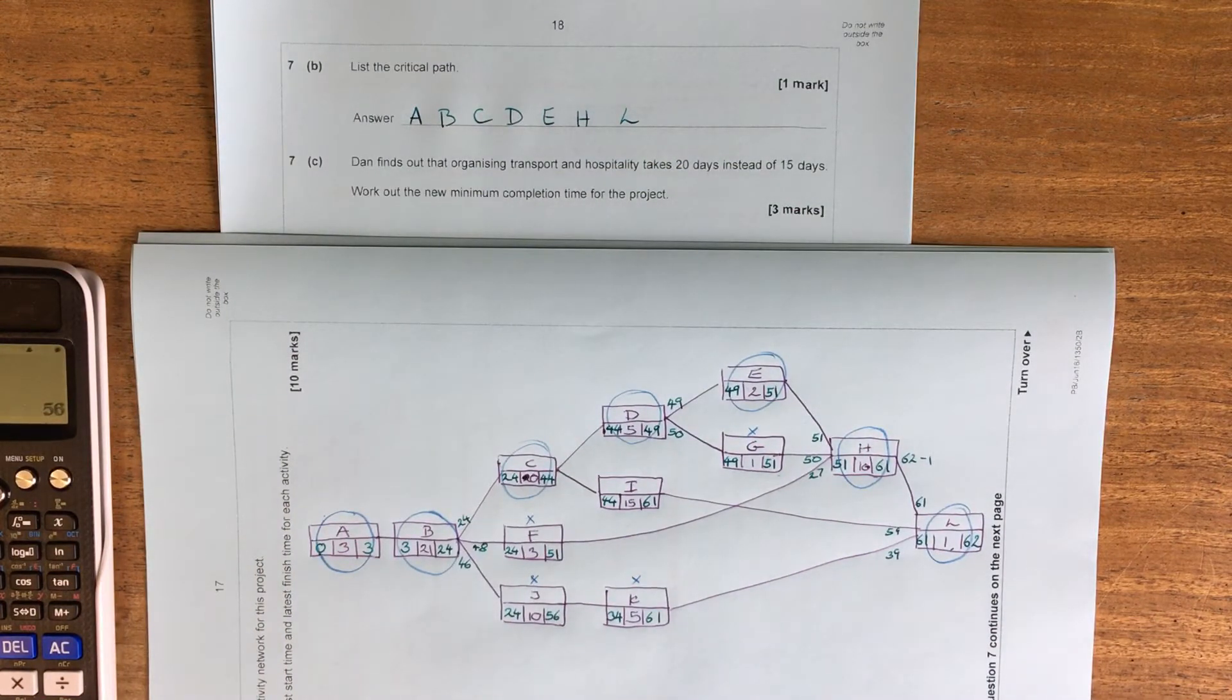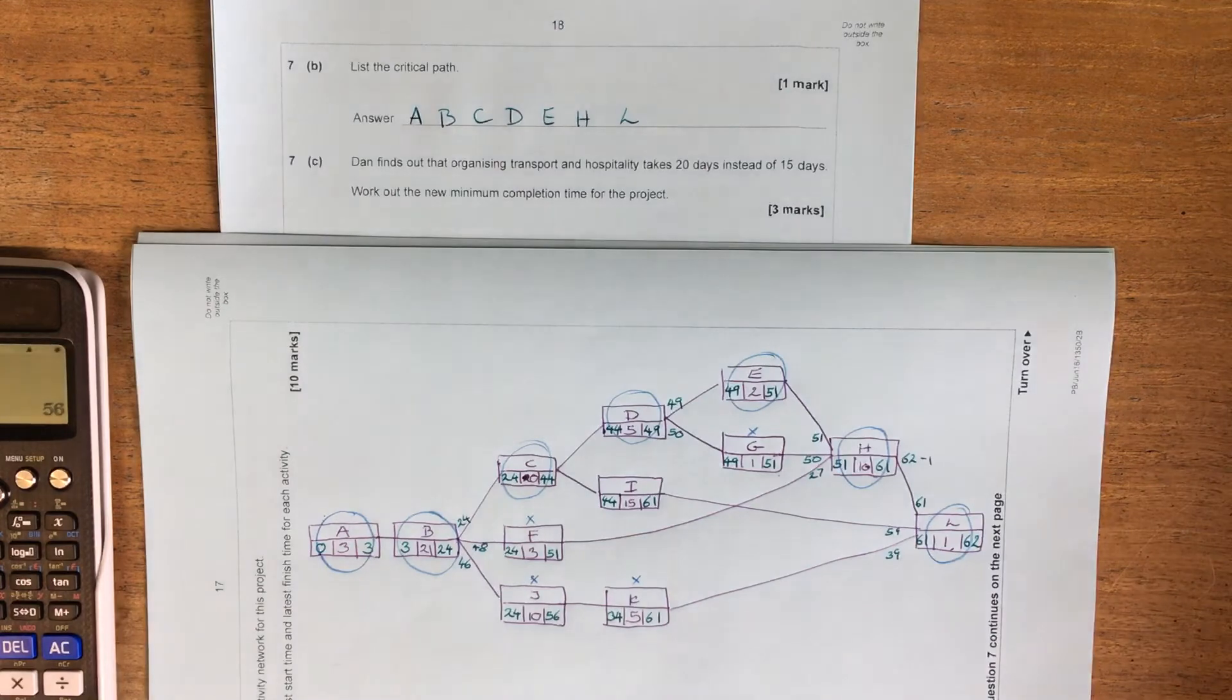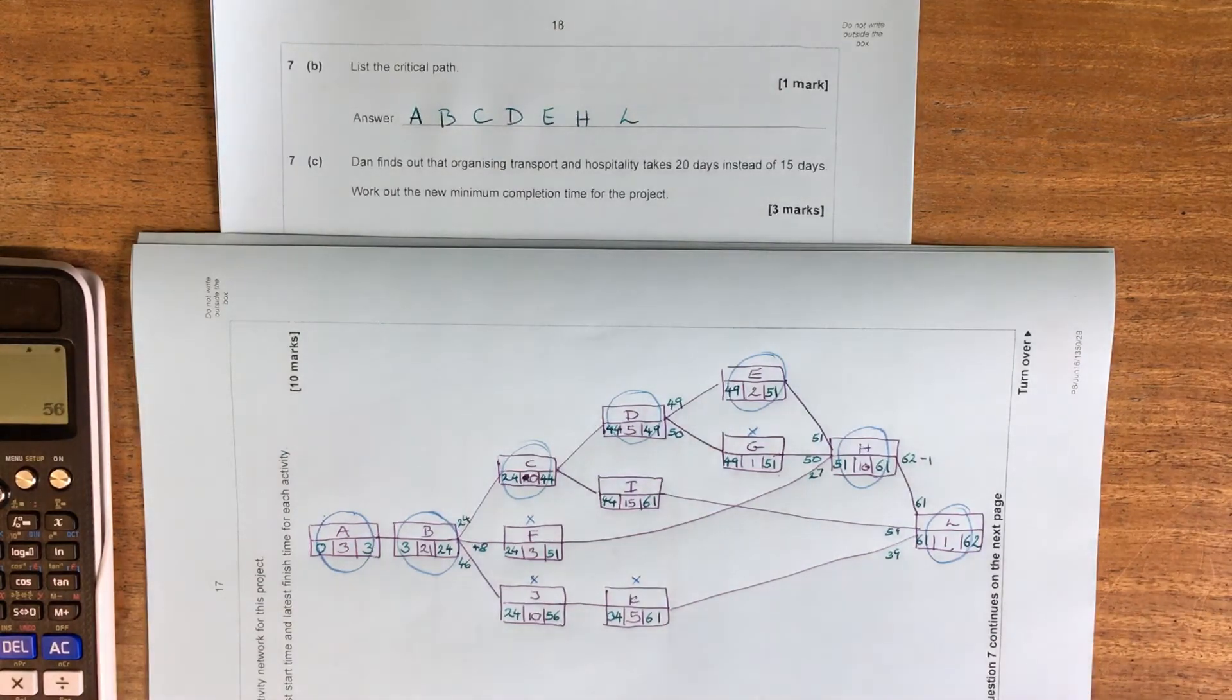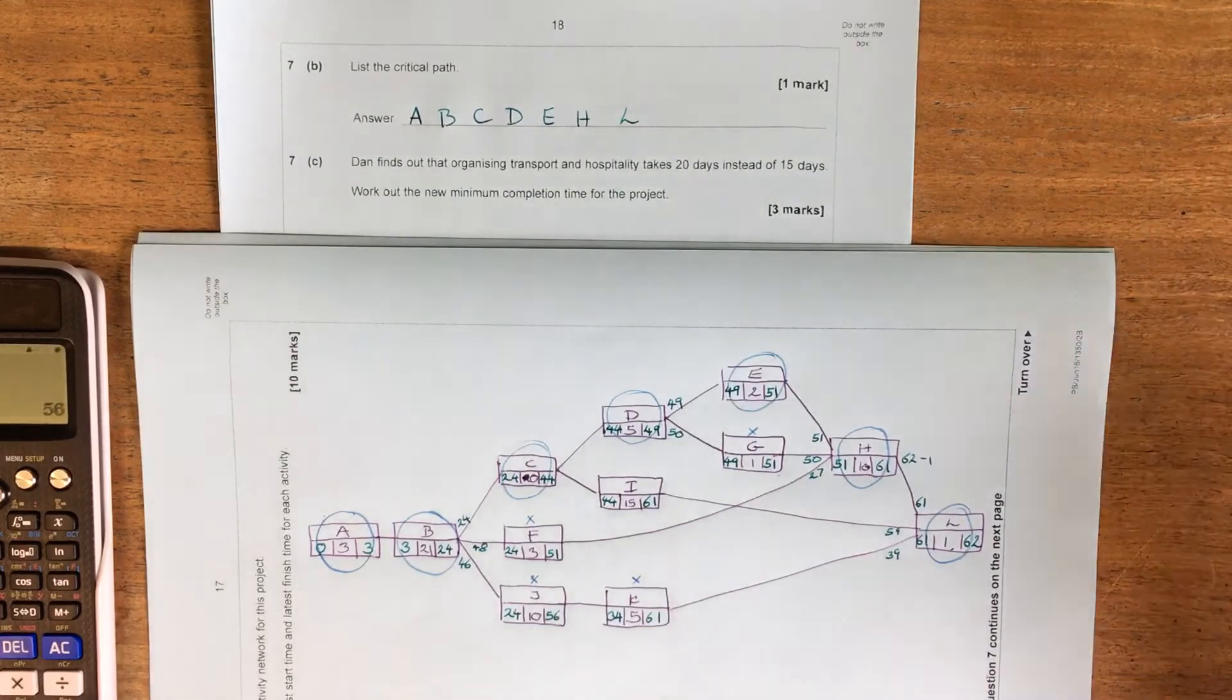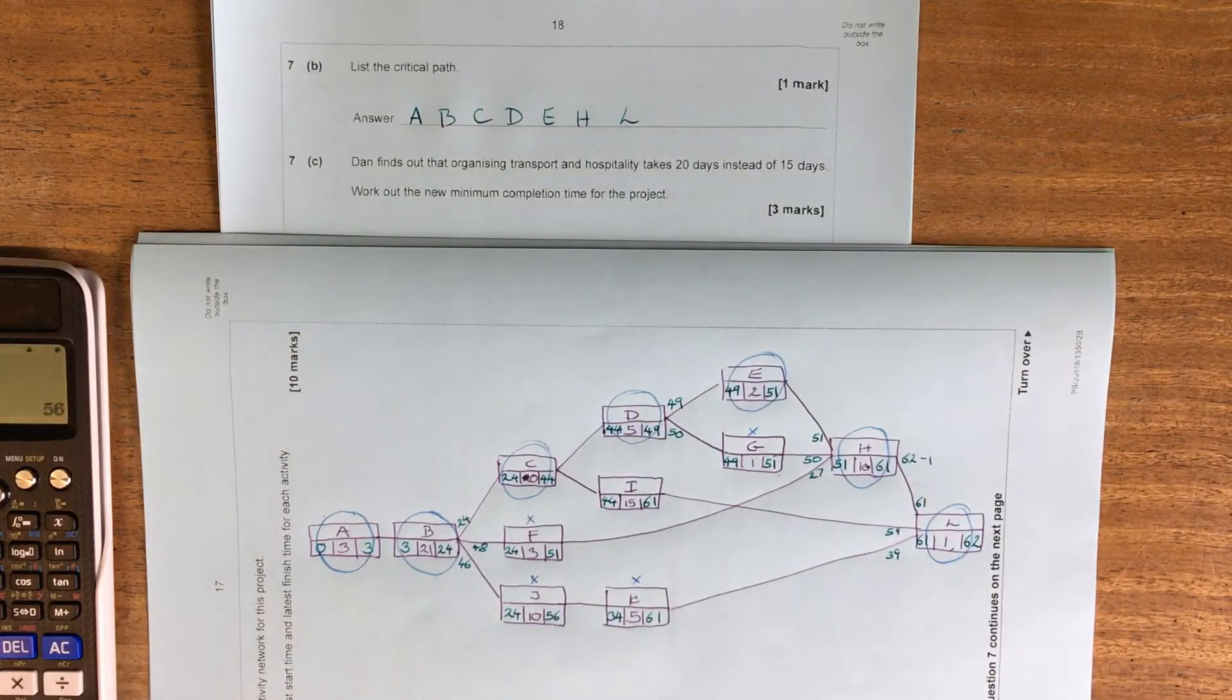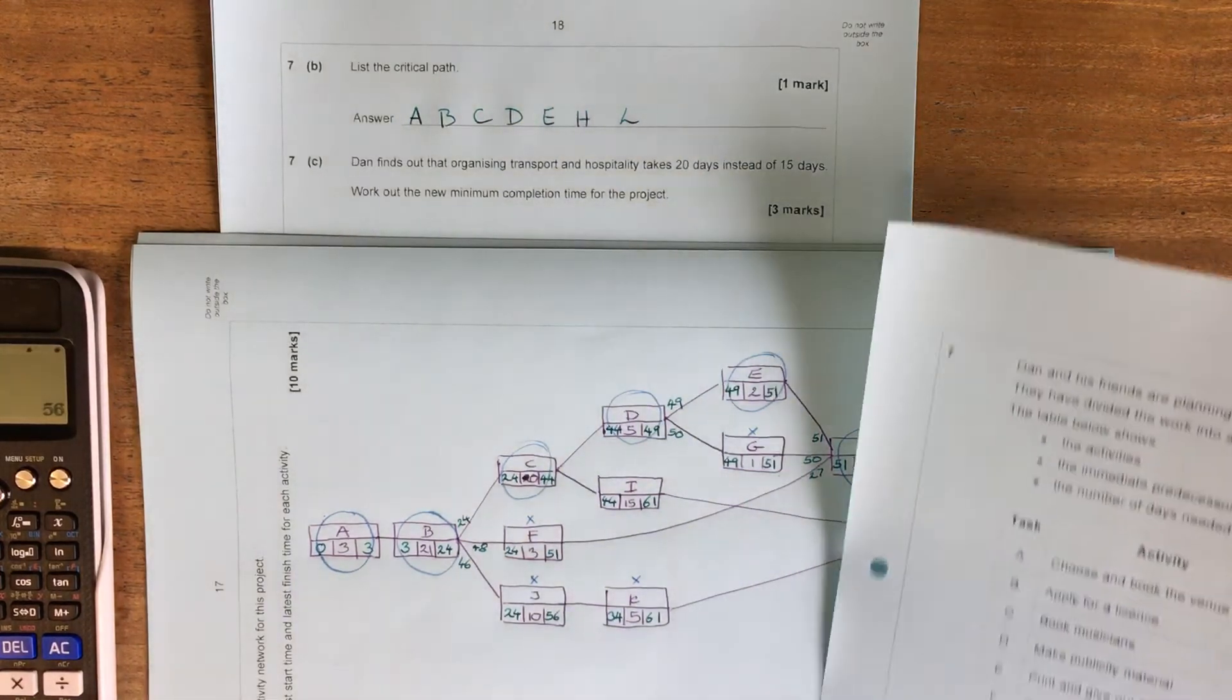So Dan finds that organising transport and hospitality takes 20 days instead of 15. So looking on our original bit of paper, we've got transport and hospitality.